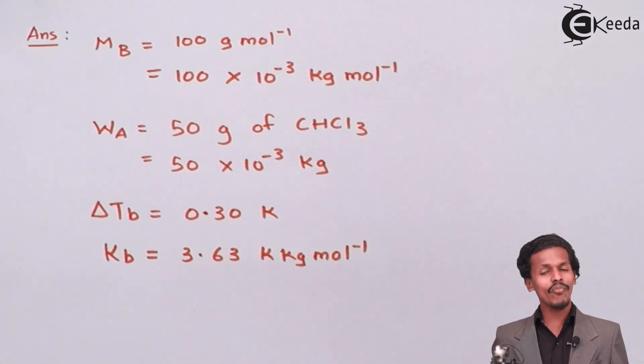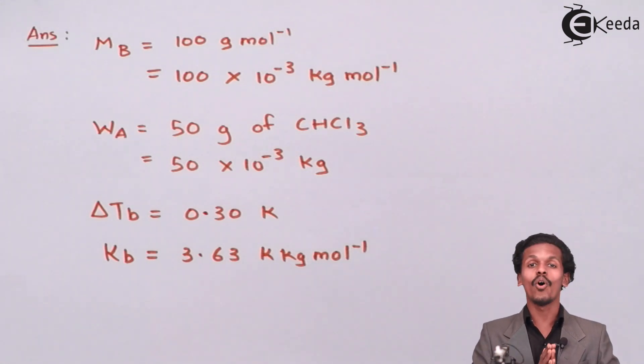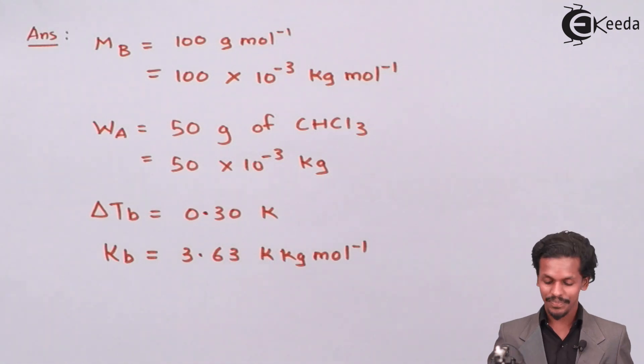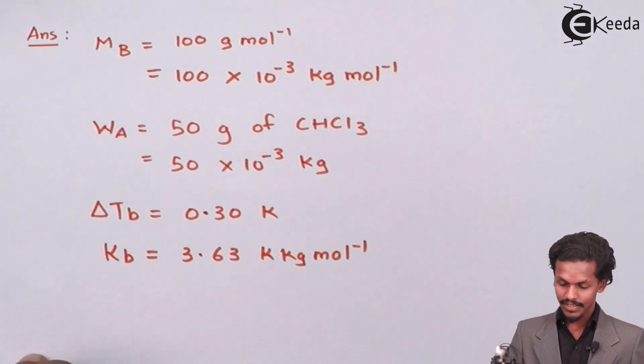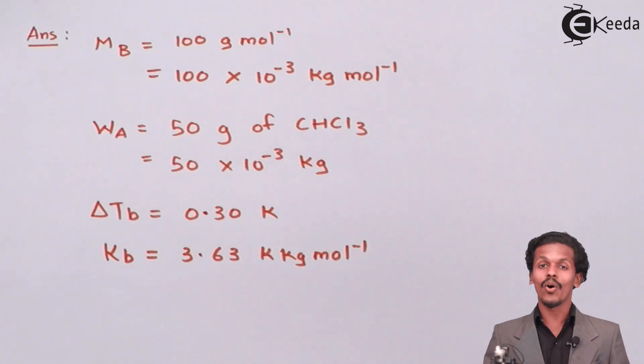So all four data are with us, and with the help of this let us find out the value of WB which is left.